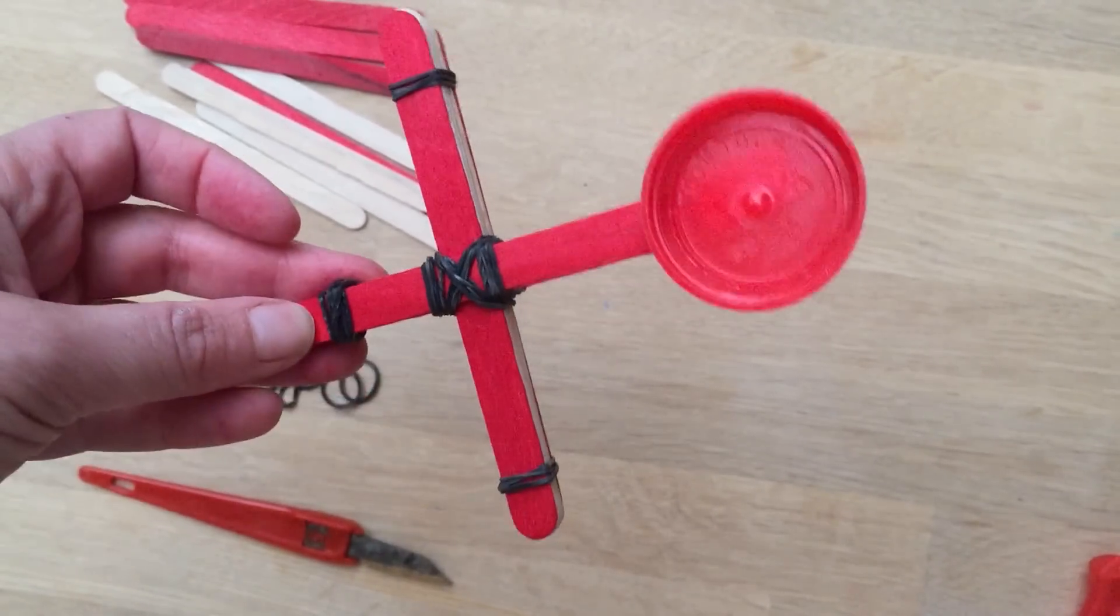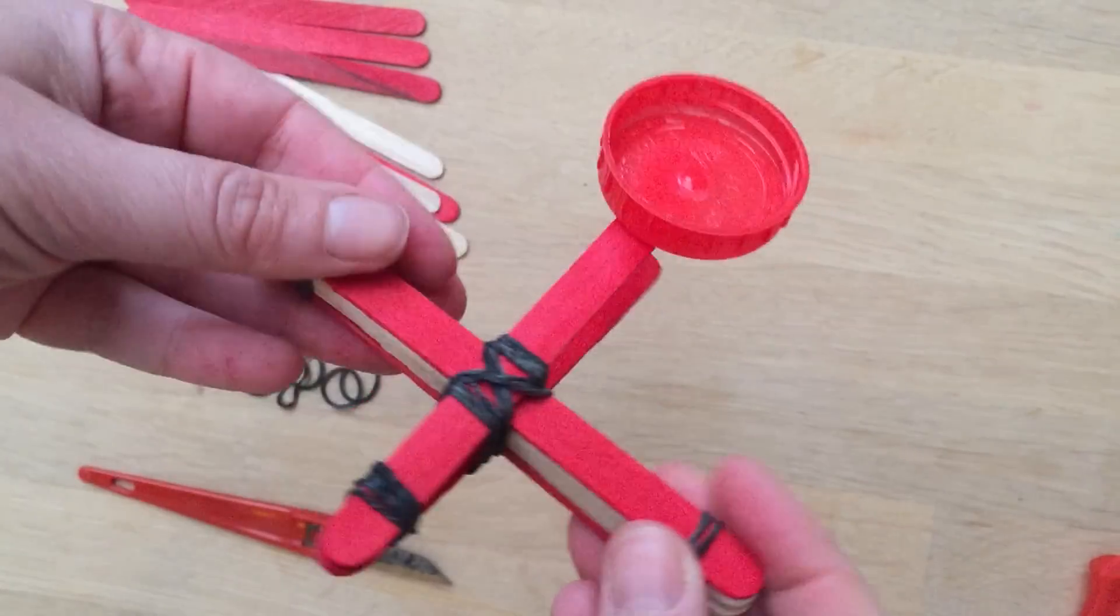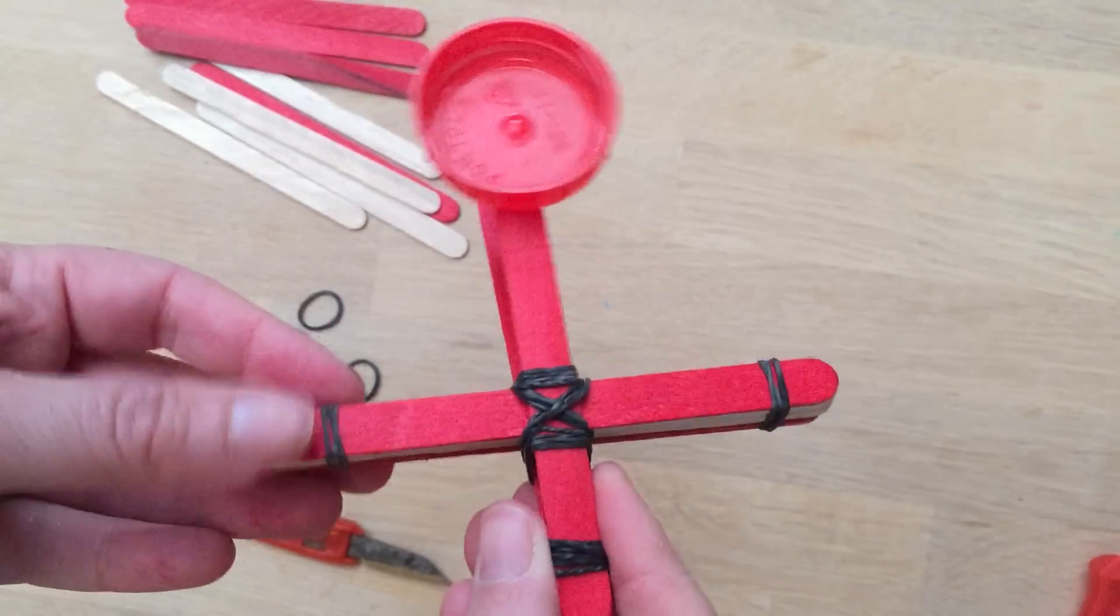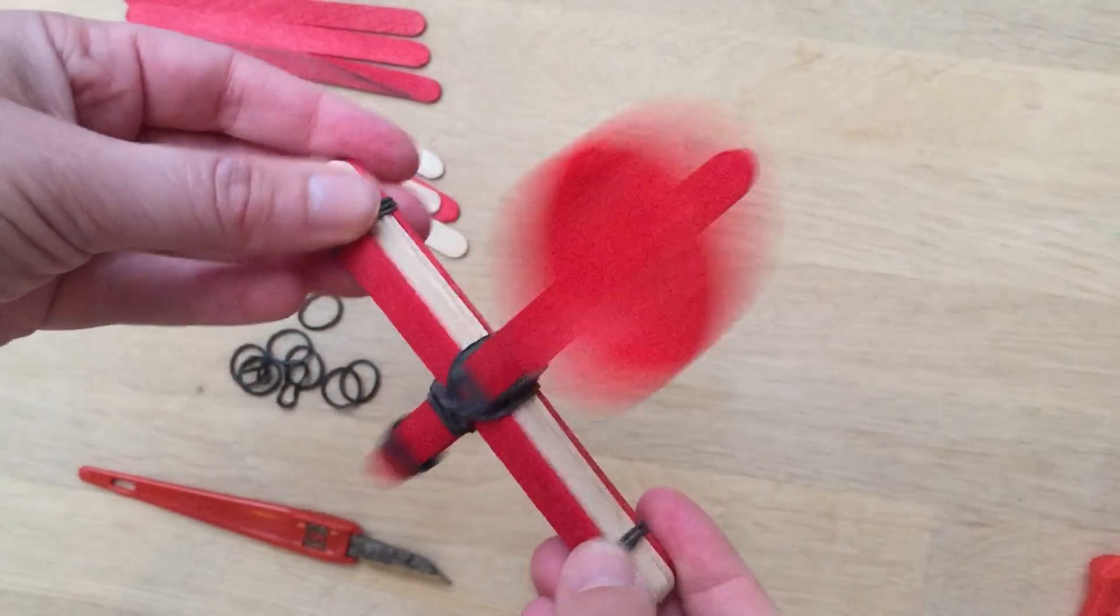Hi, welcome to Red Ted Art. Today we're going to show you how to make this super simple slingshot using popsicle sticks and loom bands.